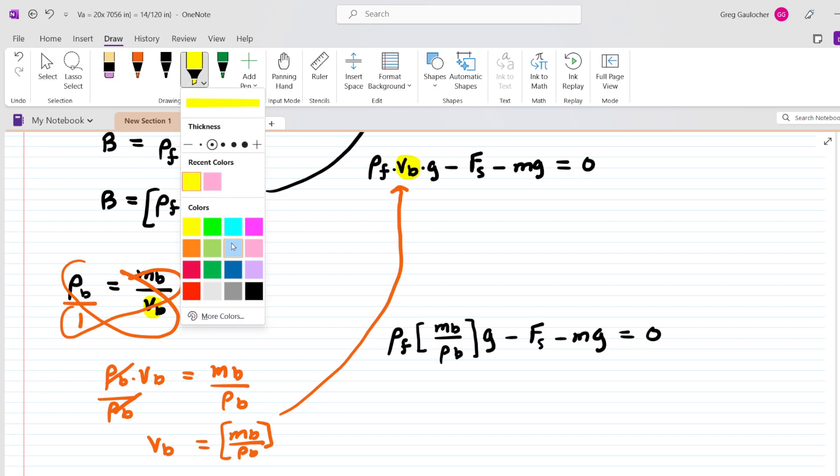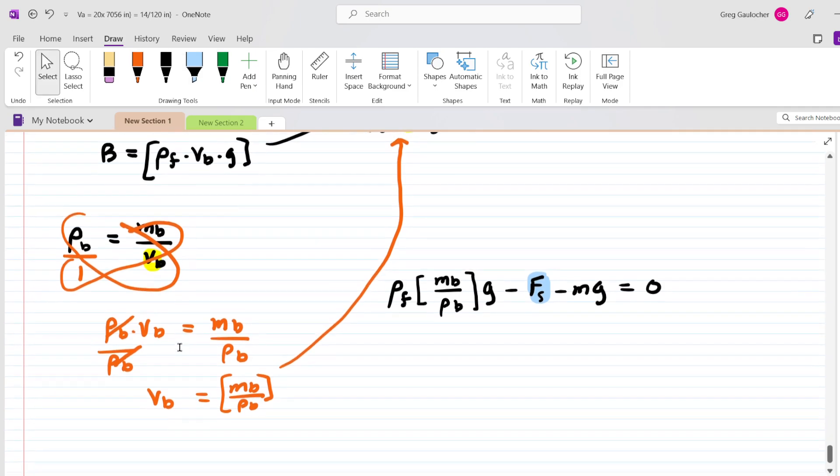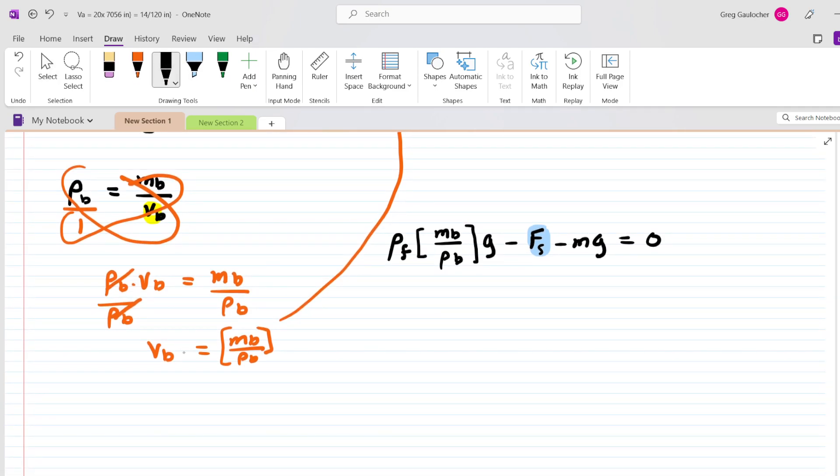We can continue expanding another term in this equation, and that would be the force exerted on the block by the spring. Now from Hooke's Law, we recall that the force exerted on the block by the spring is going to equal the spring constant multiplied by the elongation of the spring. This question calls that elongation delta L, so we will do the same. We're going to substitute that expression in for the spring force.